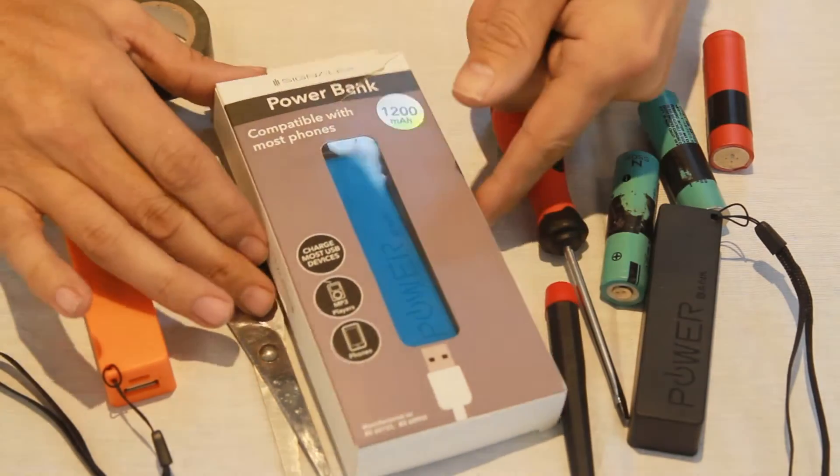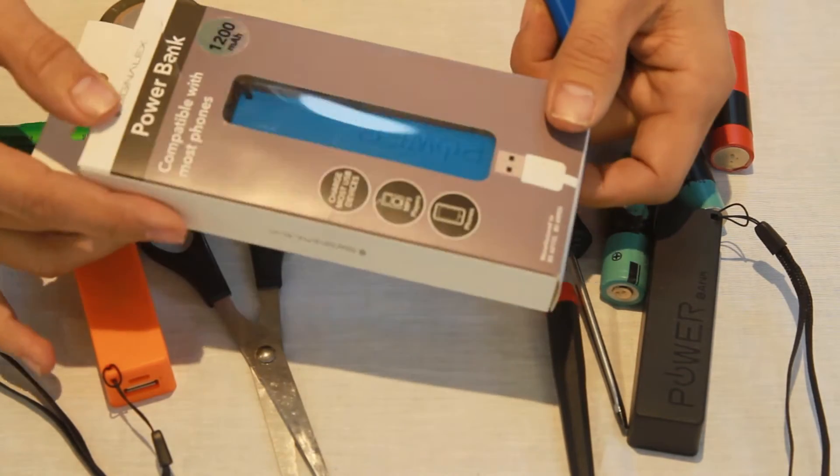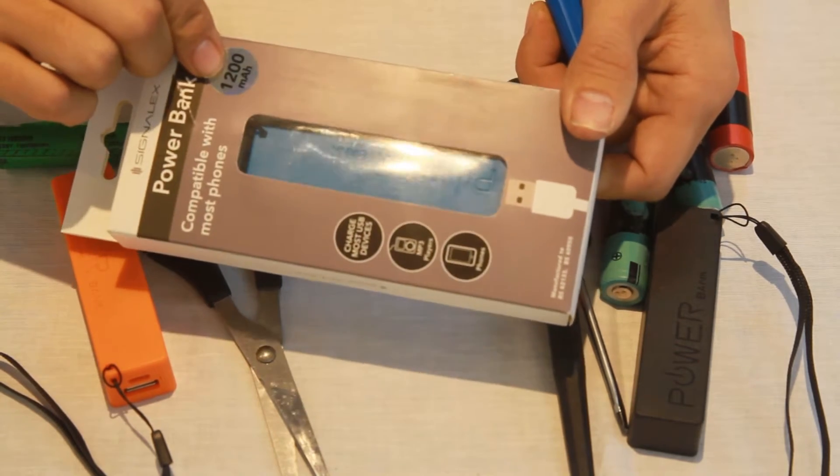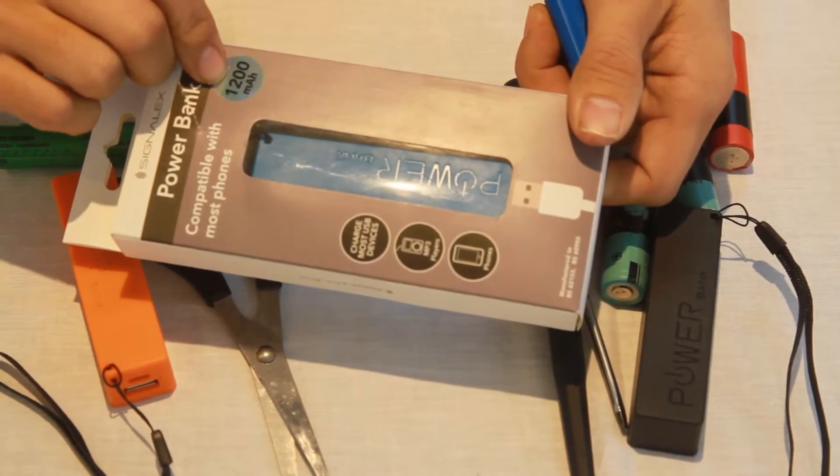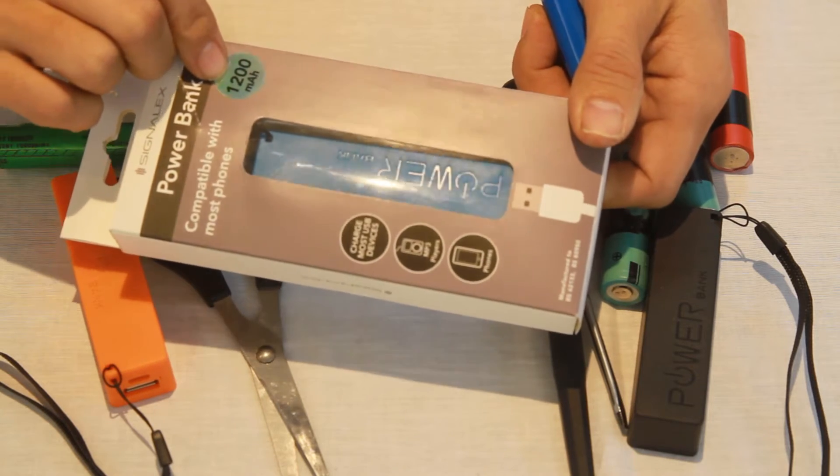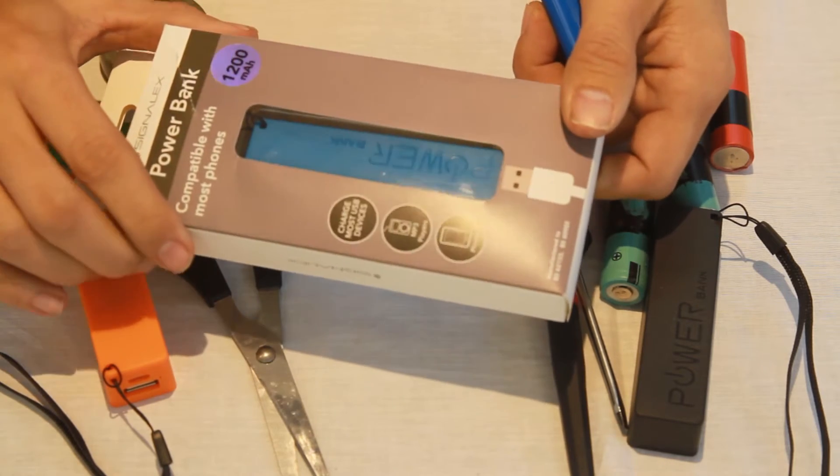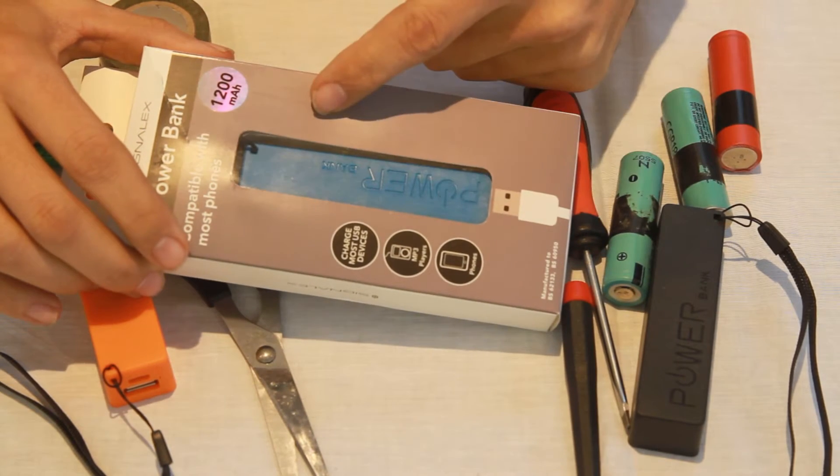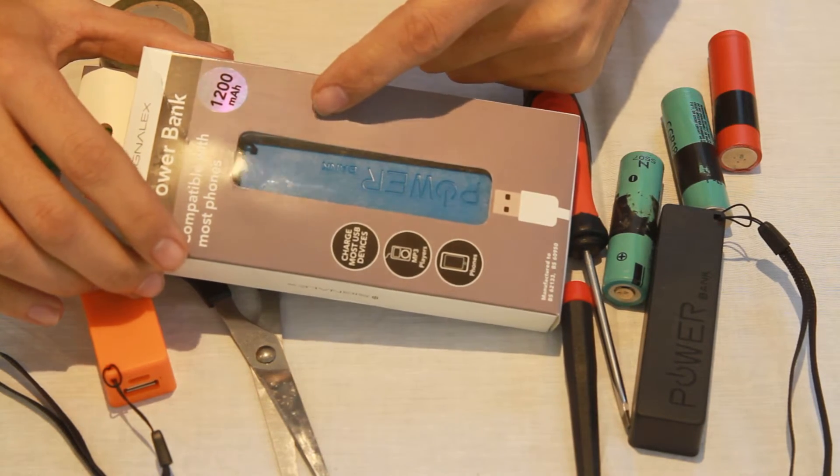In this video I'm going to show you how to take a cheap mobile phone power bank and upgrade the really rubbish battery that they come with, from a 1.2 amp hour battery to something like a 2.6 or 2.7 amp hour battery. Now I can't complain too much because this power bank cost a pound from a pound shop.